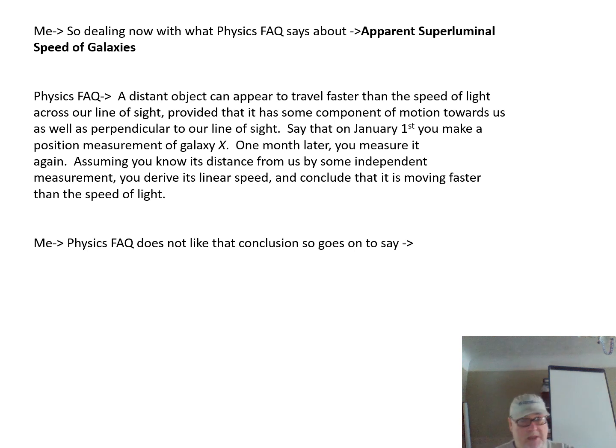So dealing now with what Physics FAQ says about apparent superluminal speed of galaxies, it says: a distant object can appear to travel faster than the speed of light across our line of sight, provided that it has some component of motion towards us as well as perpendicular to our line of sight. Say that on January 1st you make a position measurement of galaxy X. One month later you measure it again. Assuming you know its distance from us by some independent measurement, you derive its linear speed and conclude that it is moving faster than the speed of light. And Physics FAQ does not like that conclusion.